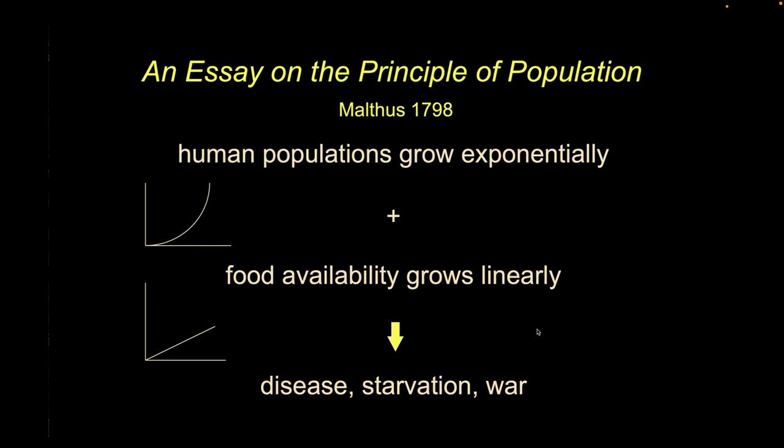Malthus argued we should take an active role and that it's a moral choice to limit population numbers rather than have it done through disease and starvation. This was later taken by eugenicists as justification for killing people they didn't like — but fundamentally, it's really just looking at the potential growth of a population relative to the potential resources that population needs to thrive.